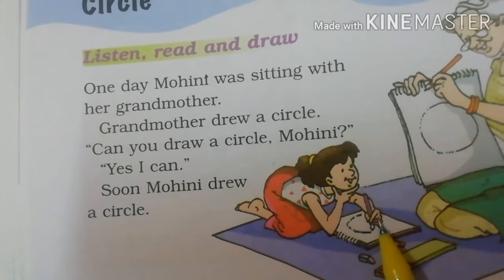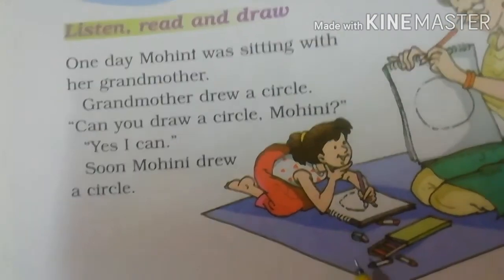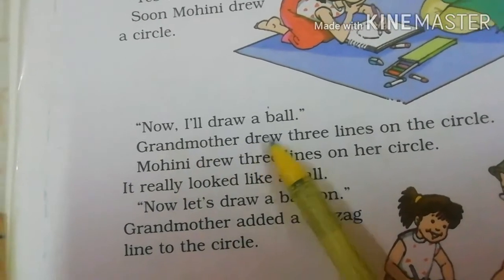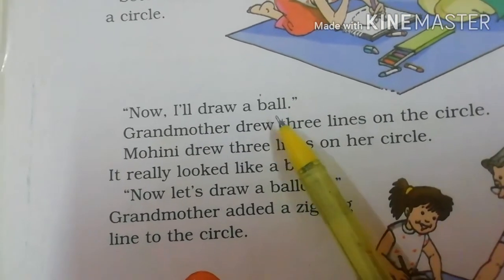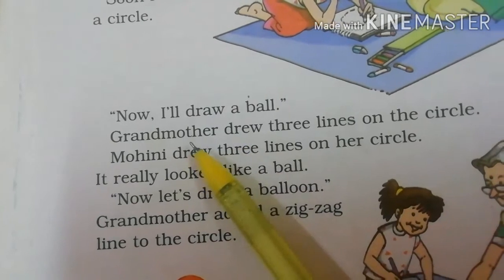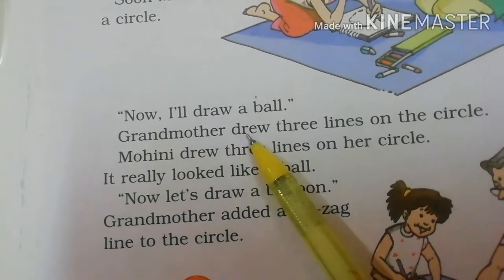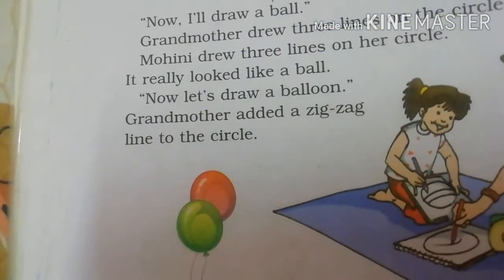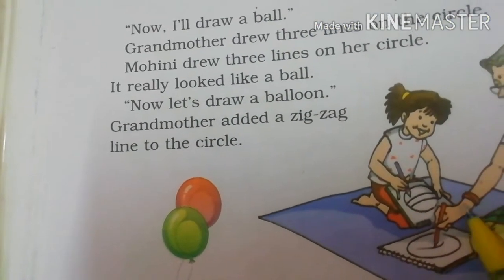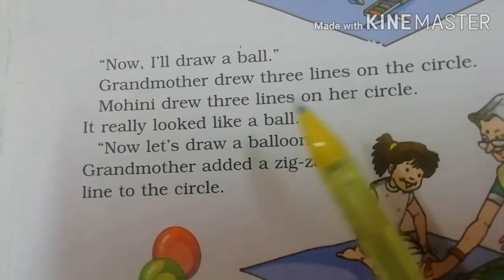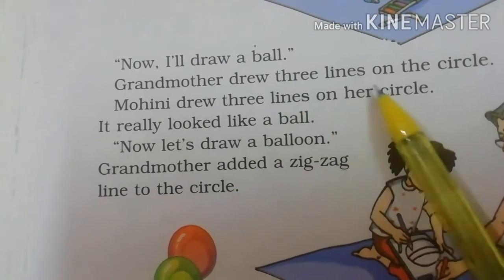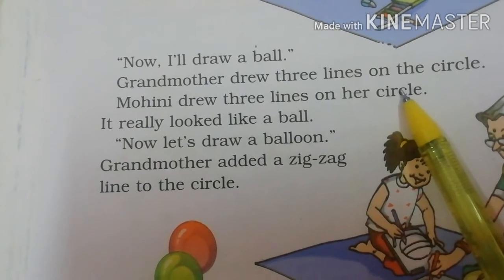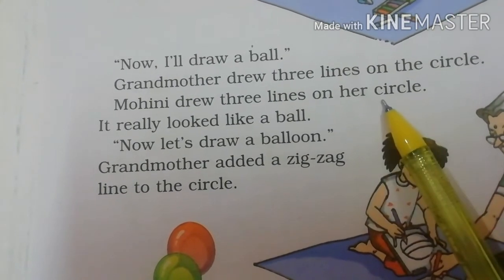Soon Mohini drew a circle. Toh phir thodi der mein Mohini ne ek circle banaya. Now I will draw a ball. Ab mein ek ball banaungi — grandmother ne bola. Grandmother drew three lines on the circle. Mohini ne apne circle ke upar paper pe three lines draw kar di.